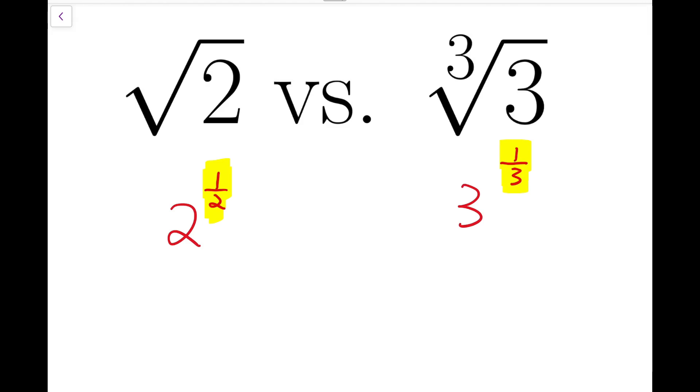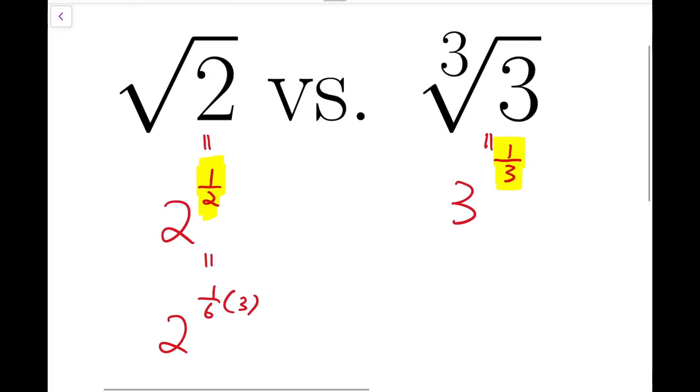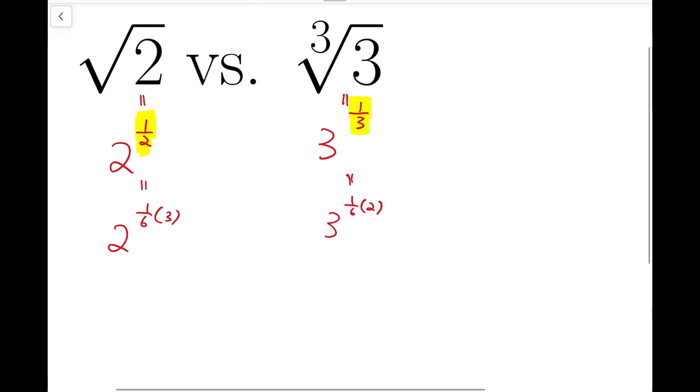So I'm going to rewrite the half as one sixth times 3, while the power of one third to be one sixth times 2. Then the two powers become 2 to the 3, and the whole power to the power of one sixth, while the other number is 3 squared, and the whole number to the power of one sixth.